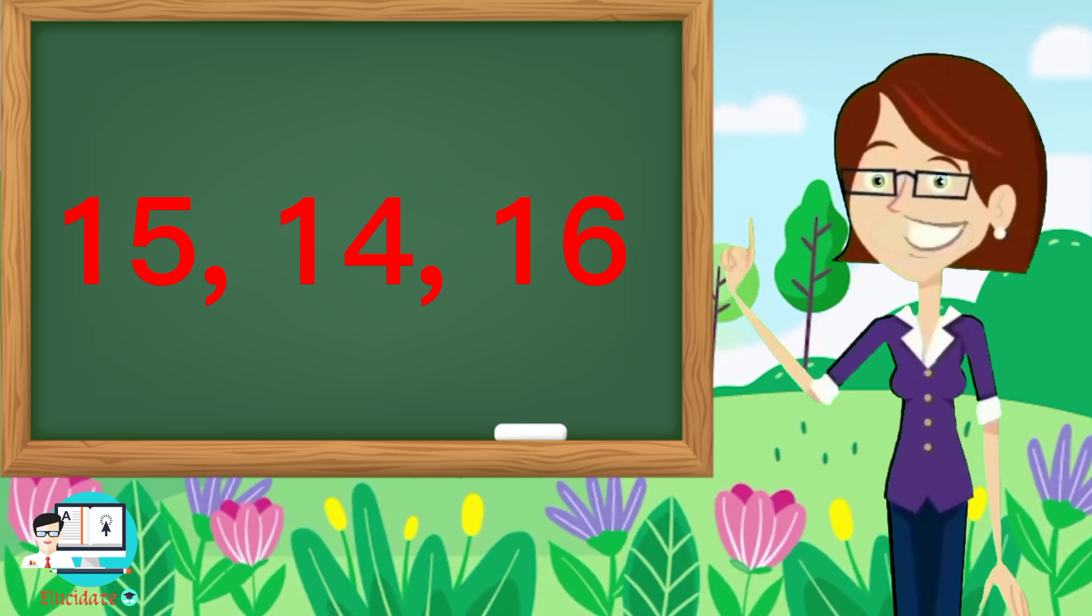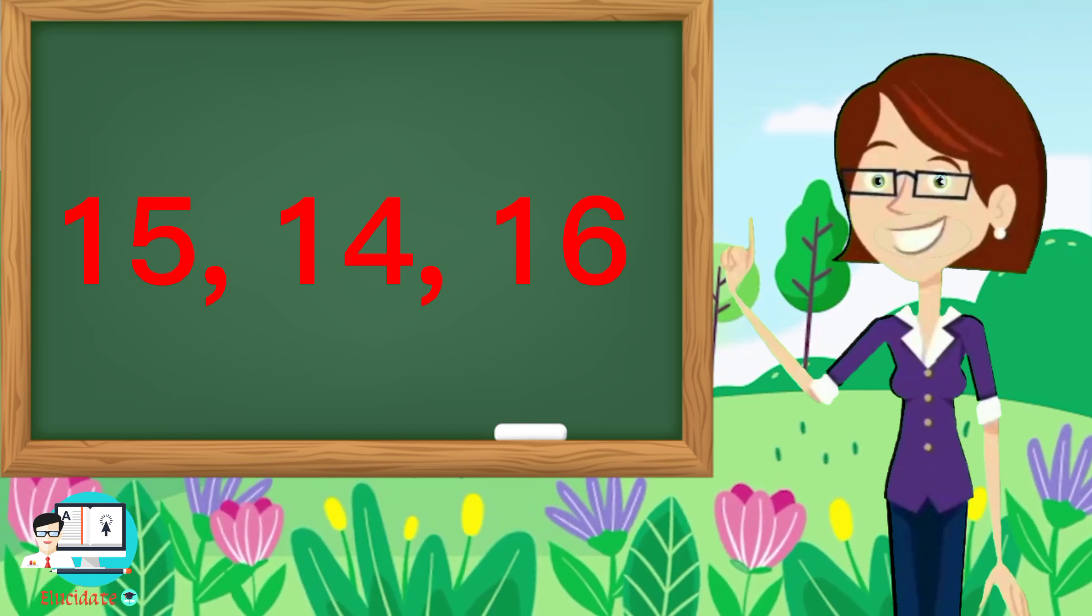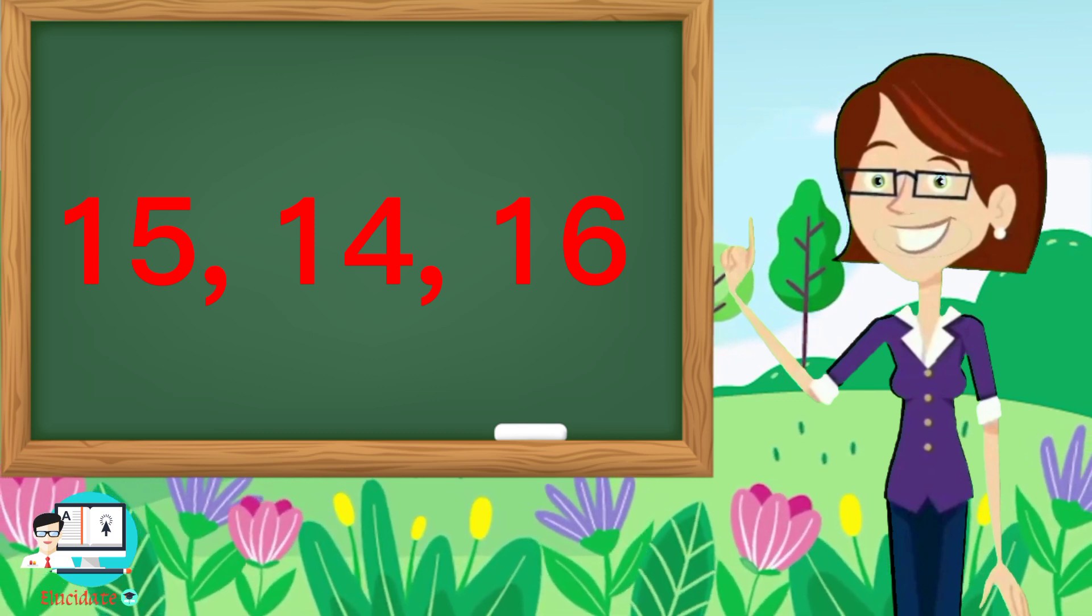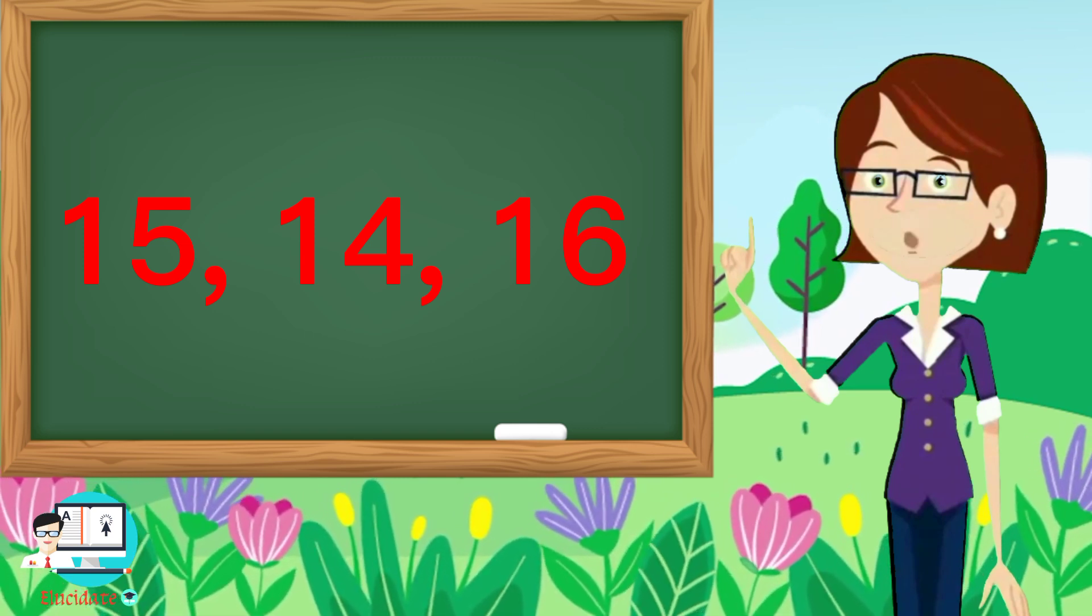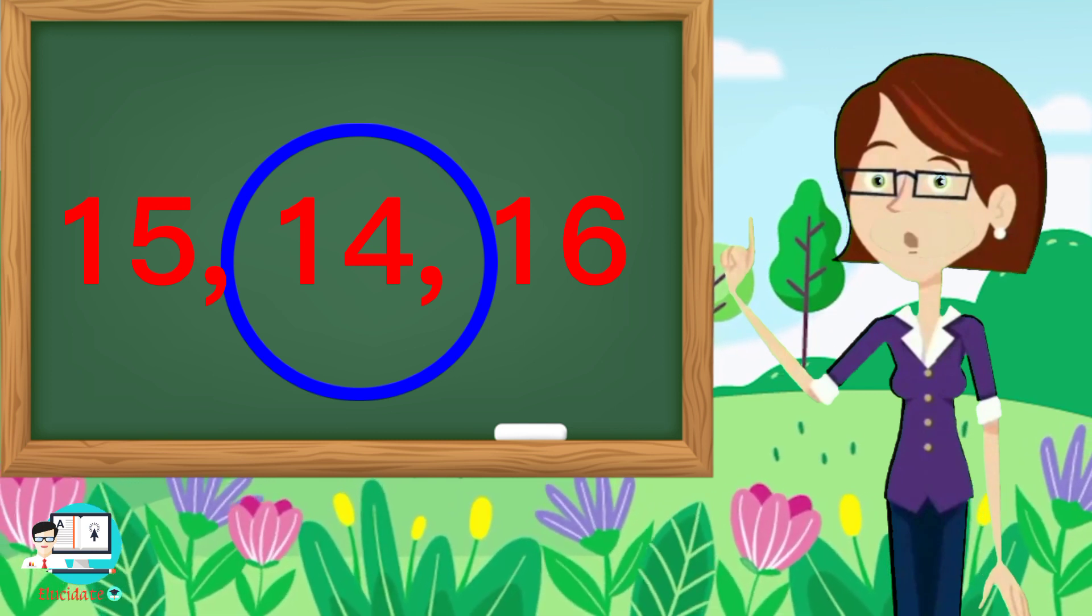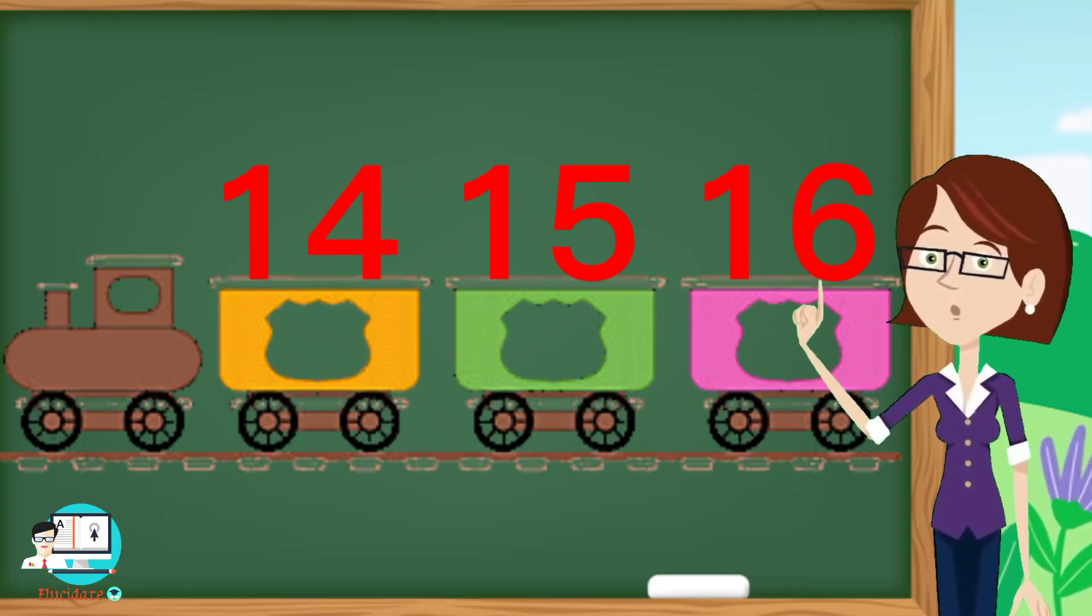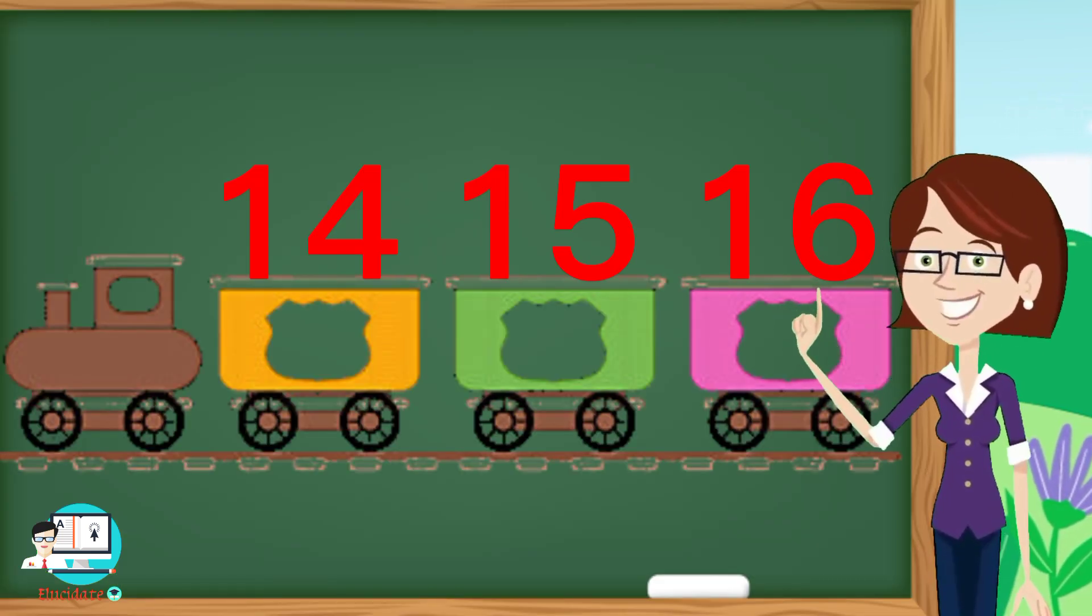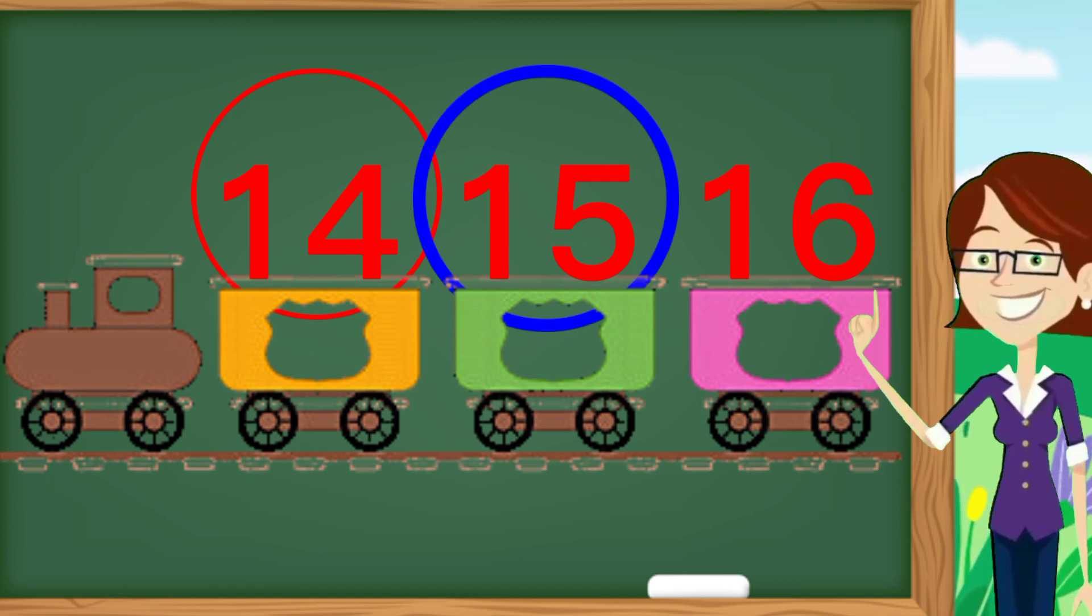Like 15, 14, 16 - here we have three numbers, but these are not arranged in ascending order. First of all, we have to look at which one is the smallest number. The number 14 is the smallest one. Now we have to arrange them. Here we have arranged those numbers in ascending order: first we got the number 14, after 14 comes 15, and then we have number 16.